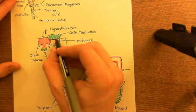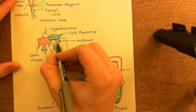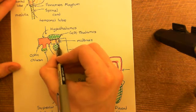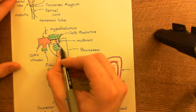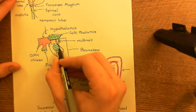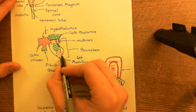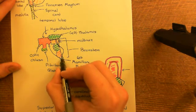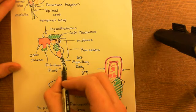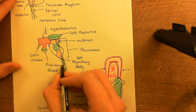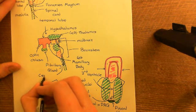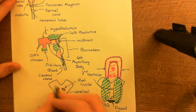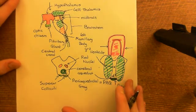The fourth ventricle is going to be continuous with the third ventricle via the cerebral aqueduct. The cerebral aqueduct comes down through the pons and then opens out into the fourth ventricle. Then it closes back up again to form a tube that goes through the entire spinal cord, known as the central canal of the spinal cord, which is full of cerebrospinal fluid.